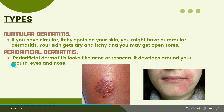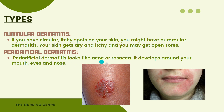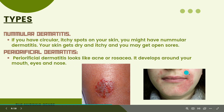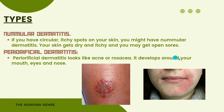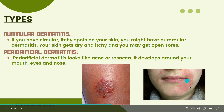Periorificial dermatitis looks like acne or rosacea — rosacea being redness of the skin — and it develops around your mouth, eyes, and nose.